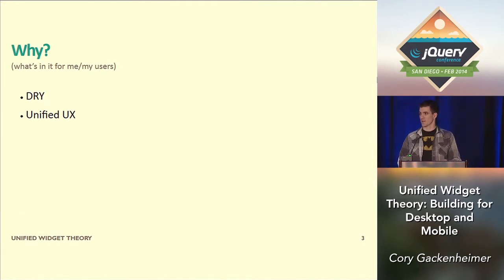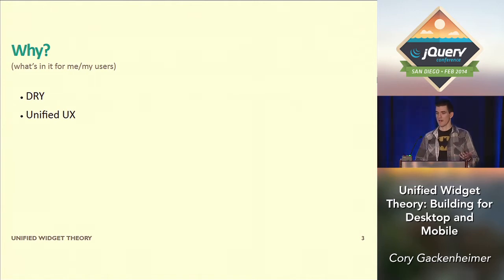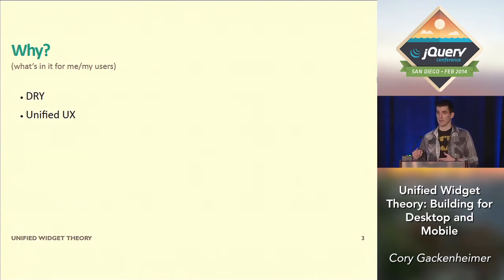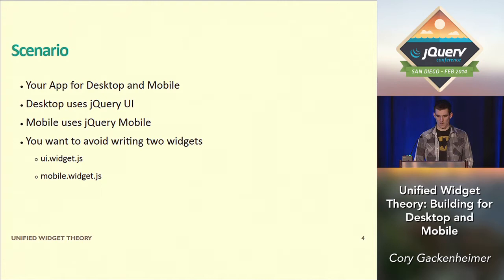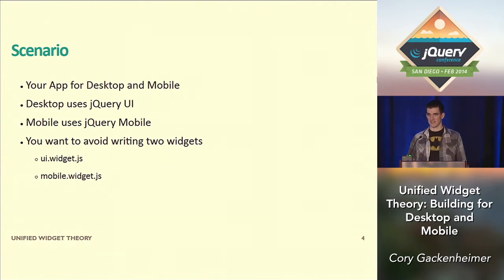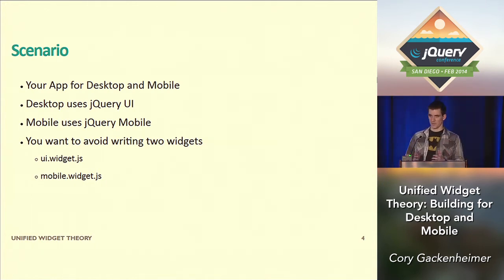So first, why is this important? As a developer, I don't want to repeat myself. I don't want to have two separate widget bases that are going to diverge. That's also going to make it a better experience for users because they're going to have the same user experience across frameworks. Here's a hypothetical scenario: you're building a desktop app and a mobile app — maybe a legacy desktop app that you want to modernize with mobile using jQuery UI and jQuery mobile — but you want to avoid writing two widgets. A lot of times people will write two separate widgets that share similar functionality, and they diverge over time.